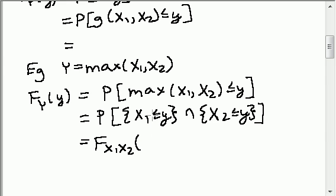And instead of being X1 less than some arbitrary number and X2 being less than or equal to some arbitrary number, we're talking about both being less than or equal to the same number y. So we're going to write y, y here instead of x1 and x2.